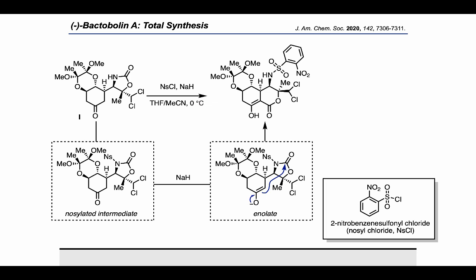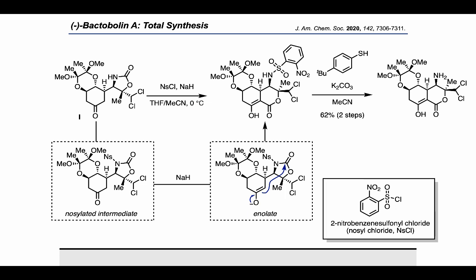The nosyl group can be removed using 4-tert-butylbenzethiol and potassium carbonate. With that, the authors revealed the amine and were ready to proceed with the amide coupling.